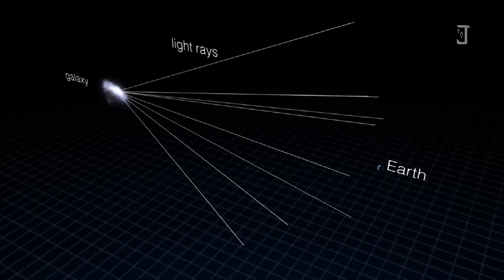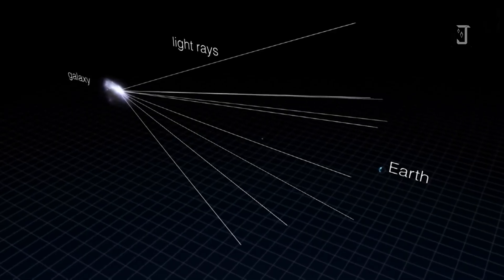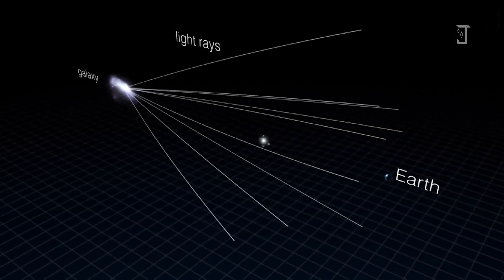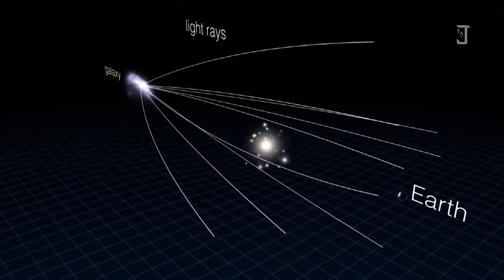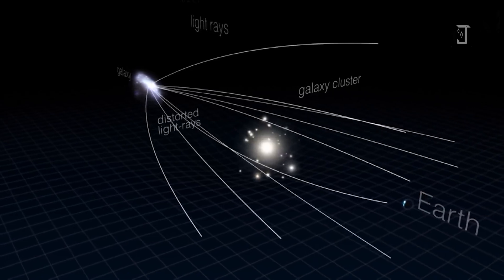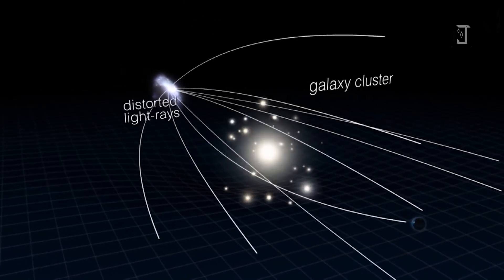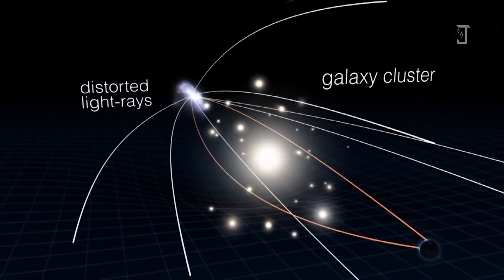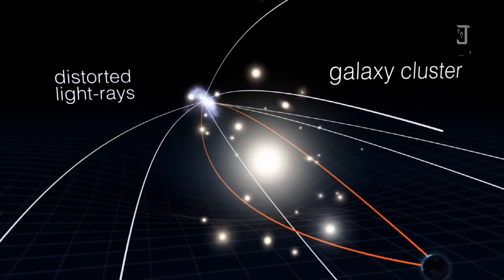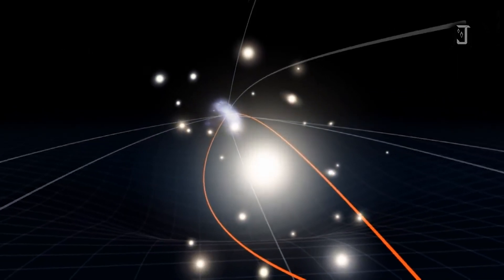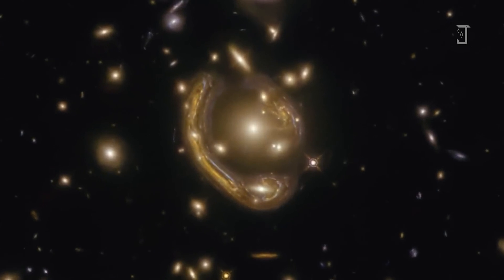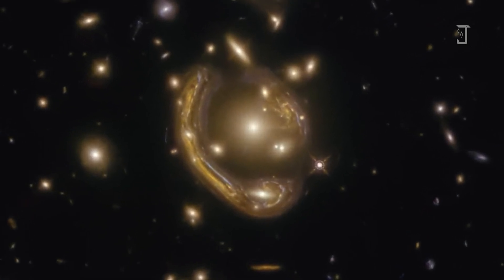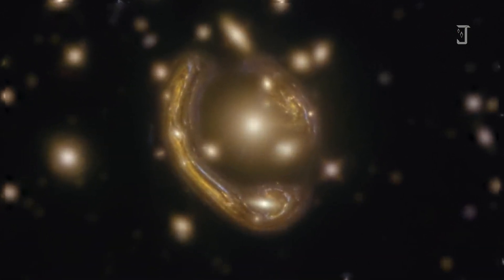Einstein rings are caused by the phenomenon of gravitational lensing, which involves the enormous mass of a black hole or galaxy. This causes light beams traveling from deep space in the background to bend, until the image of the background is enlarged and has a distorted arc shape — sometimes multiple duplicate images may appear arranged in a ring.